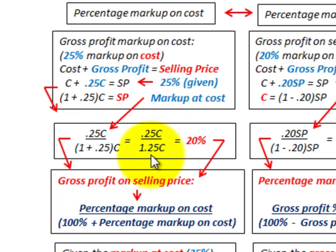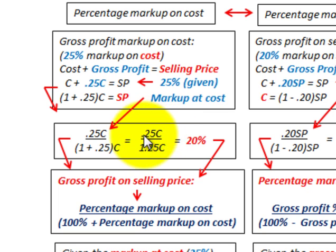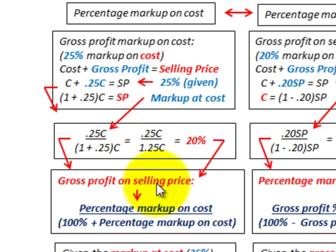Now we can calculate our gross profit on our selling price, knowing our markup on cost. We take our gross profit — 25% of our cost — and divide it by our selling price, which is based on our cost: 1 plus 0.25, or 125%. The C's cancel out, and we get 0.25 divided by 125%, which gives us 20%.